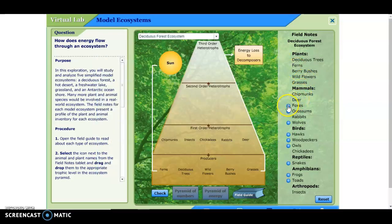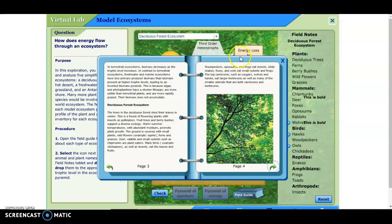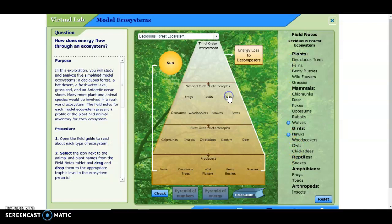All right, so we got our foxes are going to be in here, and our possums. Foxes. What did they say? Woodpeckers. I'm going to make sure I line them up next to each other. Snakes. Frogs. Toads. Did I miss any? Let me see. Snakes, foxes, owls. Did I do owls? Oh, owls. Got to do owls. Owls are in here too. There we go.